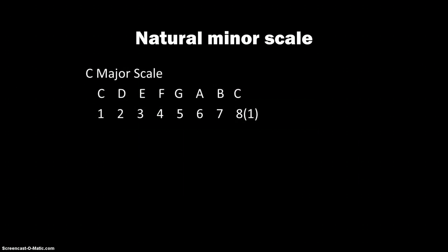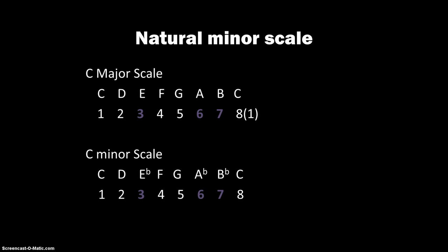So let's start with the C major scale — all natural, just like my hair shampoo. We're targeting these three scale degrees: the third, sixth, and seventh, and we're going to lower those by a half step. Since we're already all natural, those three notes will become flatted.